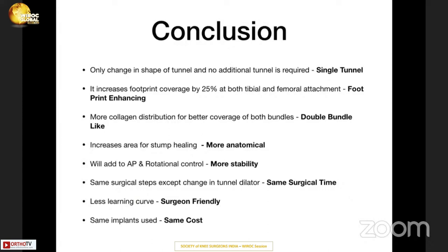In conclusion: this is a single-tunnel technique with no detrimental effects of double bundle. Only the shape of the tunnel changes — no additional tunnel is required. It increases the footprint by nearly 25%, providing better coverage of both bundles with more collagen distribution, hence a double bundle-like — not exactly double bundle — effect. It is more anatomical, increases stump healing area, and adds rotational stability by creating more of a PL bundle. The same surgical steps apply except for the tunnel dilator change — same surgical time, less learning curve, surgery-friendly, using the same implants.